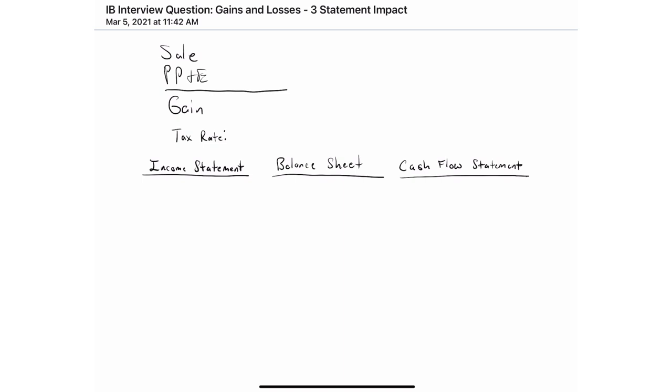Hello everyone, and welcome back to our IB interview question series. We're going to carry on with another three-statement impact question here, and in particular, we're going to look at how gains and losses flow through the three financial statements. With that said, I want to make a quick note before we dive in. In this answer, we're going to utilize a framework that was laid out in the first video in the series. If you haven't seen that video, I'd strongly recommend you go back and check it out. I will include a link to that video in the description down below. And with that, let's just hop in.